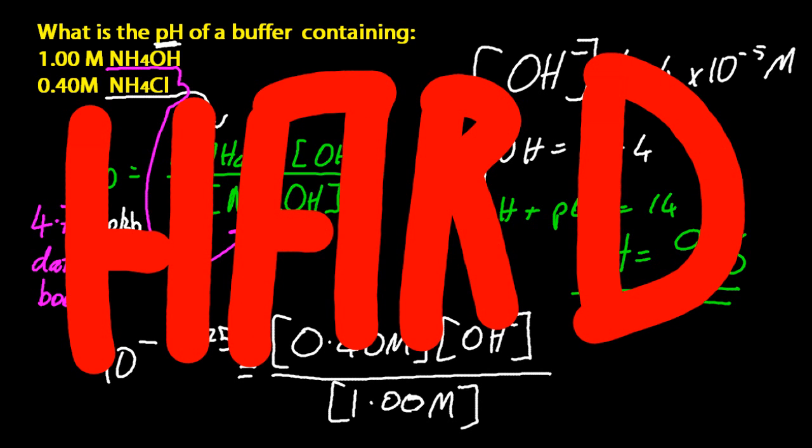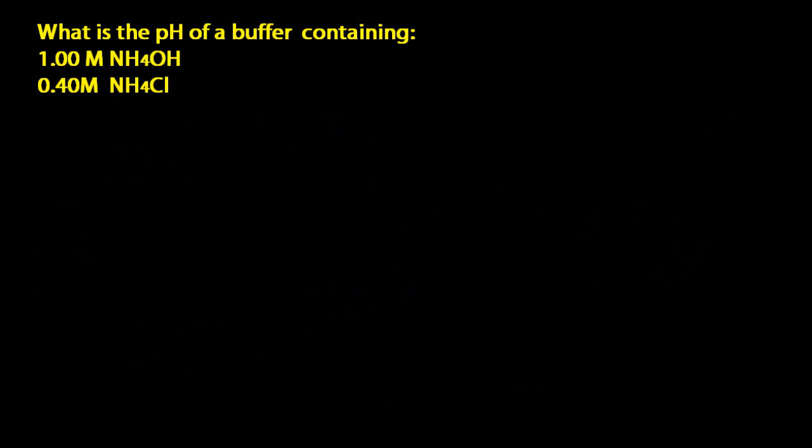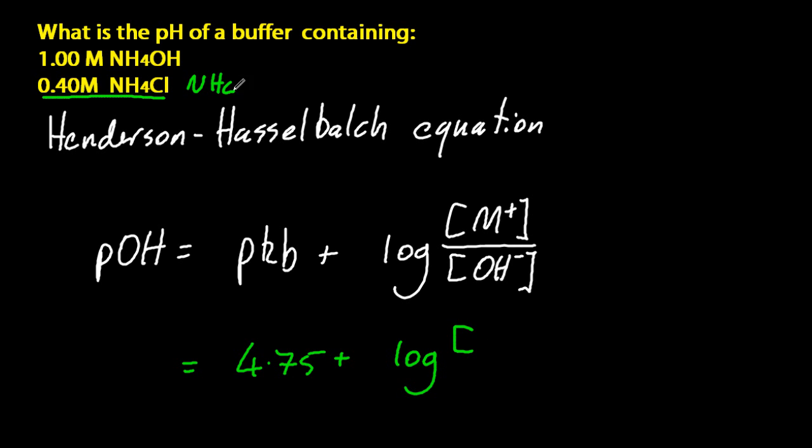You've also done that the hard way. There is an easier way to do it. If you can remember this equation, there's one for acids as well, but the Henderson-Hasselbalch equation makes this quicker if you can be bothered to learn it. And you can just pop the numbers straight in without working out the negative logs or the 10 to the minus whatever. You can just use the numbers straight from the data booklet. And that gives me pOH again.